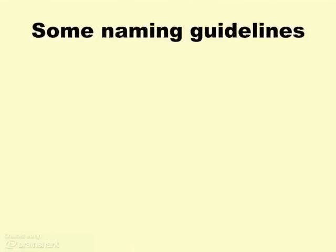If you are the first person to describe an organism as being an individual species — maybe you found it, or it was an organism that used to be thought of as part of another species — whatever, you get to name it. You can name it after your mom, which has been done. You can name it after yourself, which gets done a lot. You can name it after your favorite rock and roll guitarist, which has been done. Doesn't really matter, just have to follow some rules.